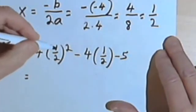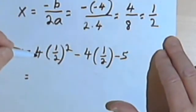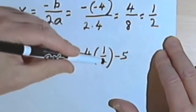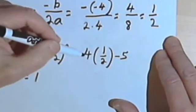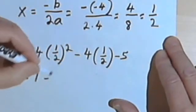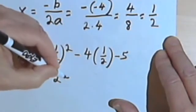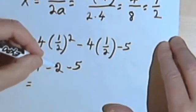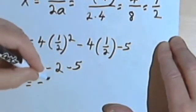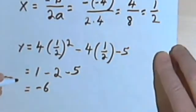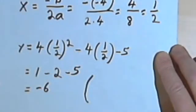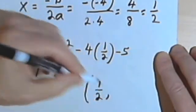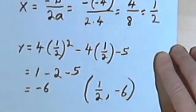So one-half times one-half is one-quarter, and one-quarter of 4 is just 1. Then I have negative 4 times one-half. Well, that means I'm looking for one-half of negative 4, so I know I've got a negative. One-half of 4 is 2 minus 5. So I'm going to have 1 minus 2 is negative 1, minus 5 is negative 6. So that means the ordered pair for my vertex is going to be one-half, that was my x-value, comma negative 6. That's my y-value.